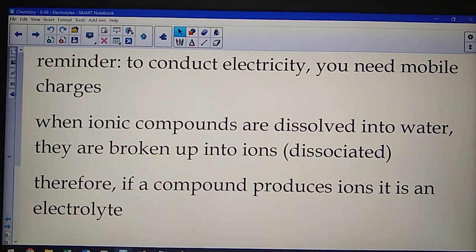To remind you, in order to conduct electricity, you need to have mobile charges. And when ionic compounds get into water, they disassociate. They are broken up into ions. It's the idea of ions that's important. Covalent compounds don't break up into ions, but ionic compounds do. So therefore, to be an electrolyte, you need to produce ions.